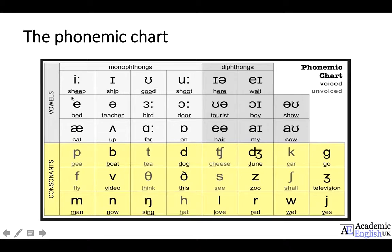There are five vowels — A, E, I, O, U — but there are 20 different sounds.